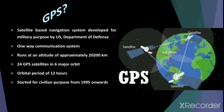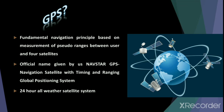Each orbit consists of four satellites. The orbital period is 12 hours of sidereal time and is highly predictable. GPS became available for civilian purposes from 1995 onwards in the United States. The fundamental navigation principle of GPS is based on the measurement of pseudo-ranges between the user and four satellites. The official name given by the United States was NAVSTAR GPS, which stands for Navigation Satellite System with Timing and Ranging Global Positioning System. The United States began using GPS from 1973 onwards, and GPS is a 24-hour, all-weather satellite system.